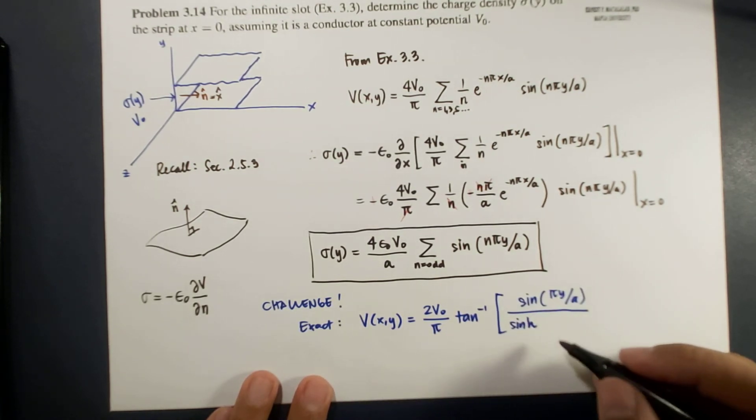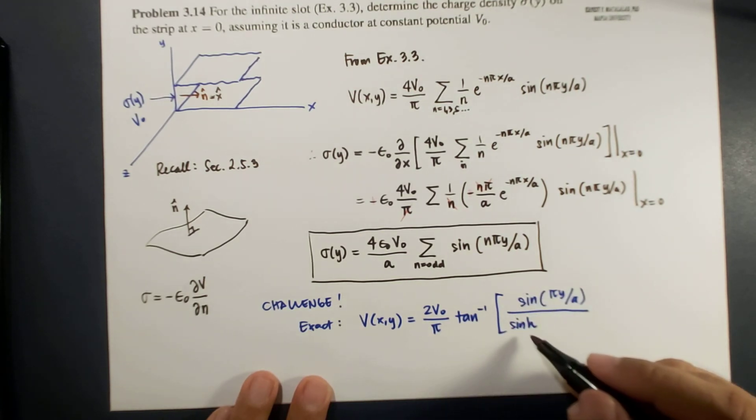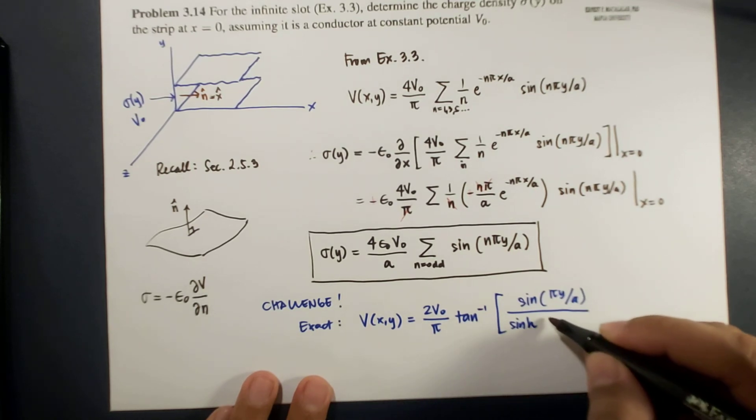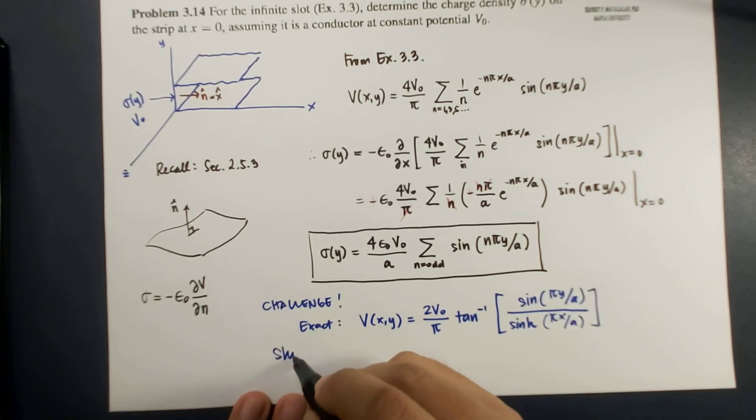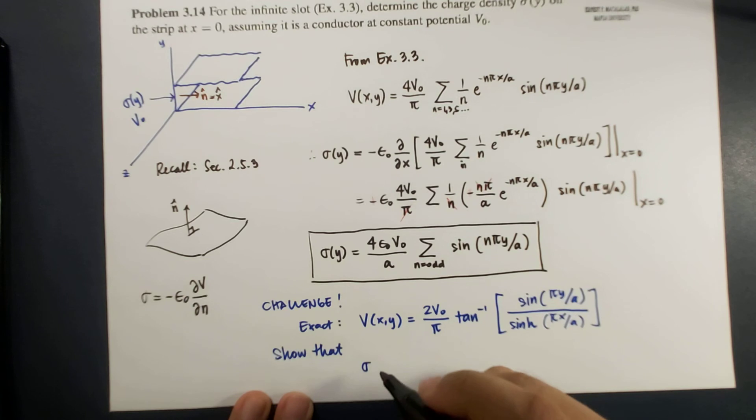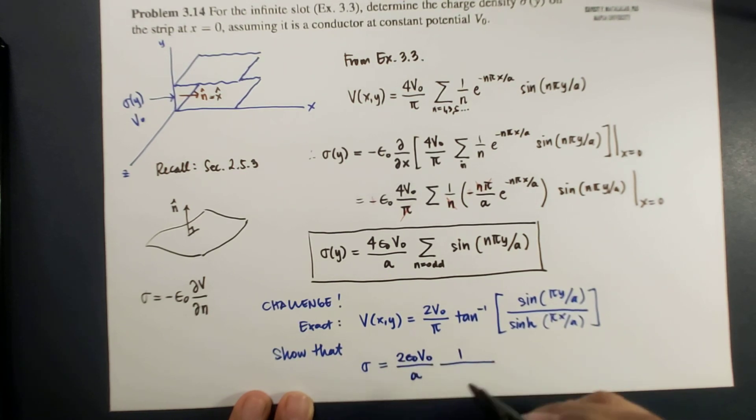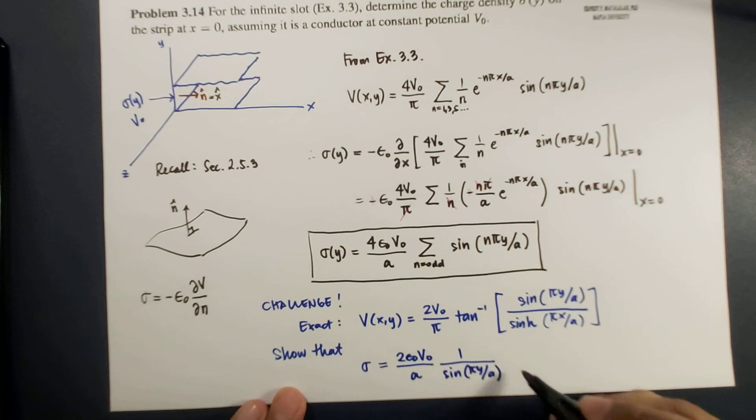And this exact solution involves an inverse tangent, a hyperbolic sine function, sine of pi y over a. Now show that sigma is now equal to 2 epsilon naught V0 over a, times 1 over sine pi y over a.